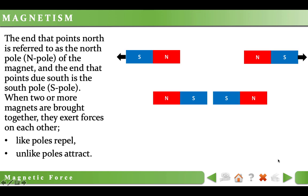In the second figure, we have two S-poles, two south poles coming together, it means these two magnets also repel each other.